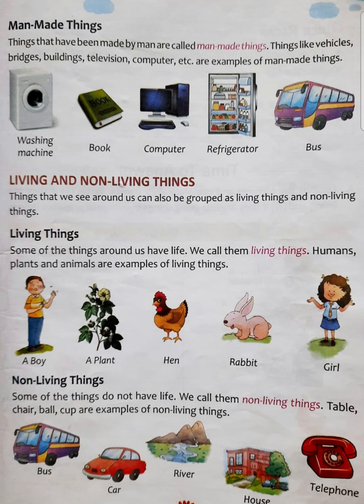Living and non-living things differ in the following characters. First: living things need food and water. Aap dekh sakte hain ki boy ho, plant ho, ya koi bhi animal ho — in sabhiko kya chahiye hota hai? They all need food to eat and water to drink. Toh pehli characteristic hai: living things need food and water. But non-living things do not need food and water — table, chair, ball, cup, phone — yeh sab khana nahi khaate.